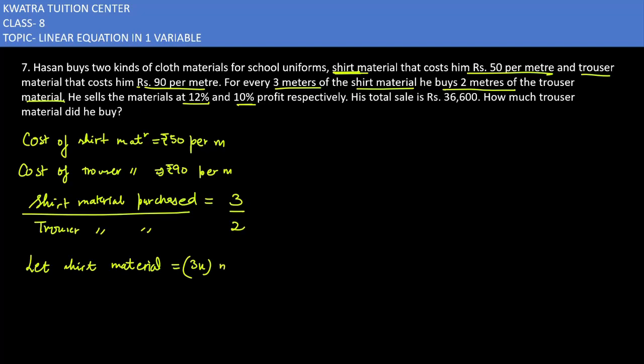Let shirt material be 3x meters and trouser material be 2x meters. Now let's calculate cost price. Cost price for shirt material would be 50 multiplied by 3x, which equals 150x rupees. Cost price of trouser material would be 90 times 2x, which equals 180x.